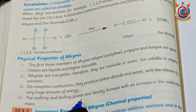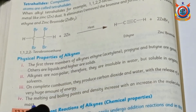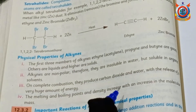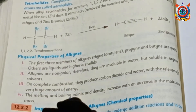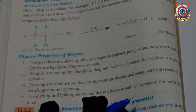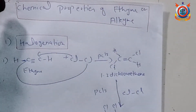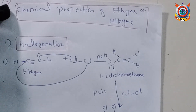The melting point, boiling point, and density increase with an increase in molecular mass — meaning that as molecular mass increases, the melting and boiling point of the alkyne also increases. Now, chemical properties of ethyne.